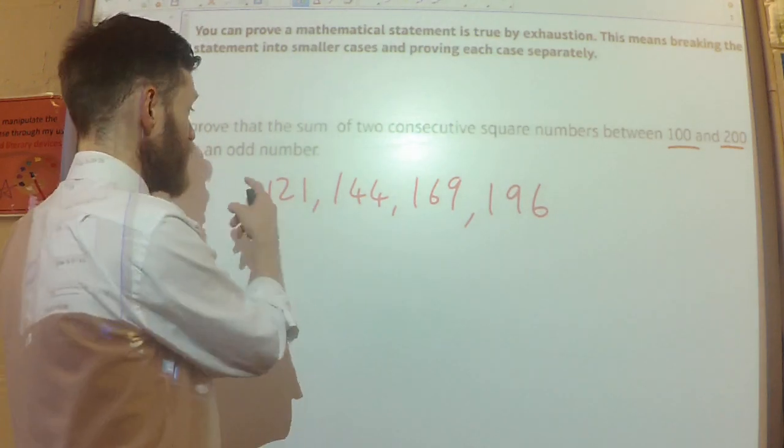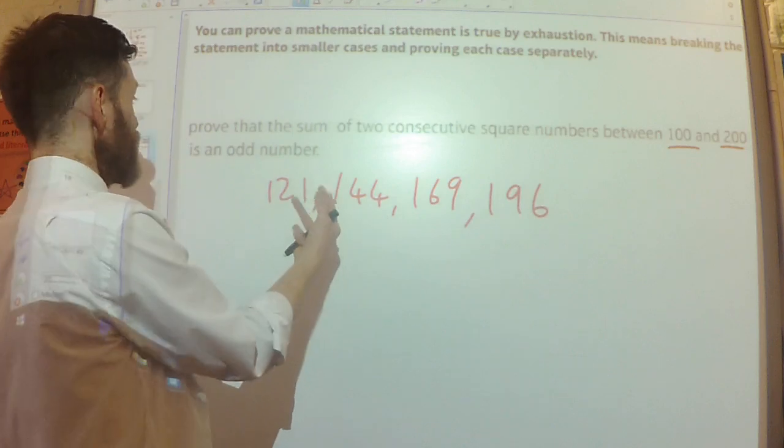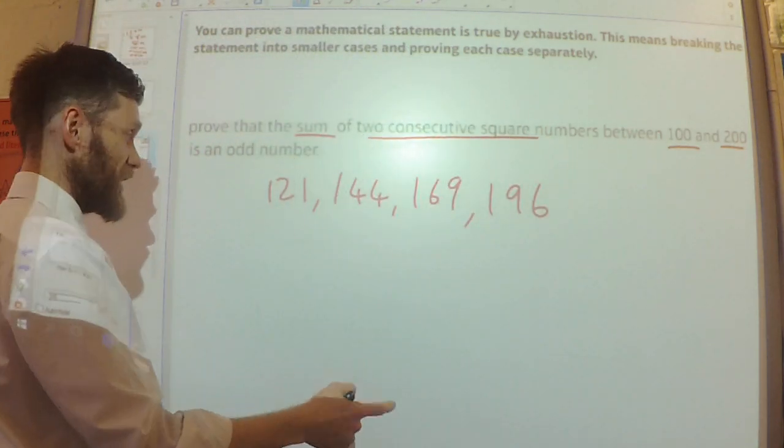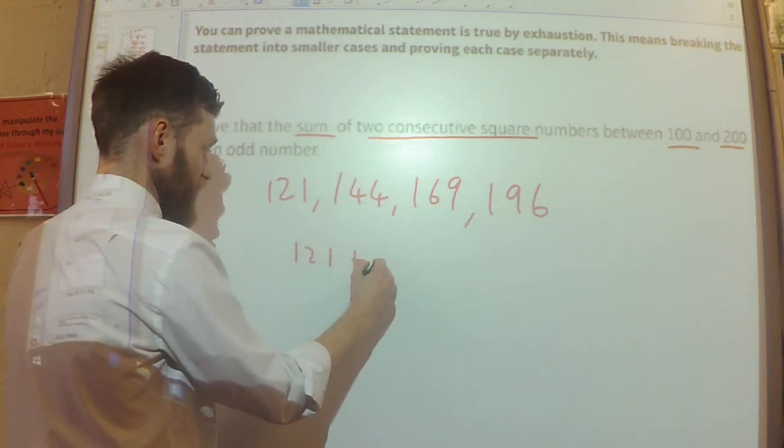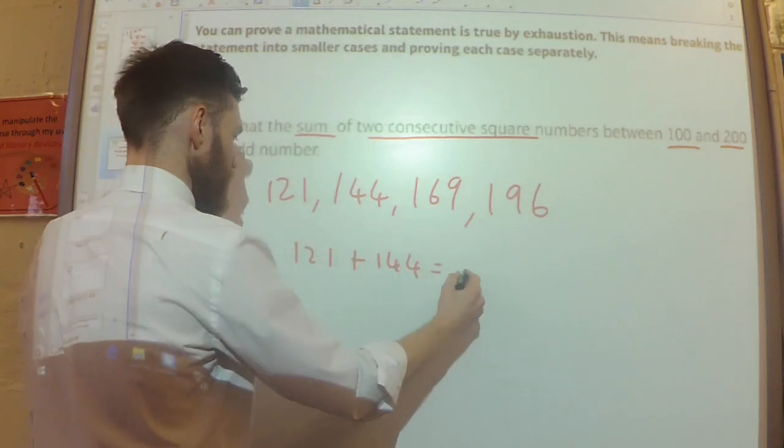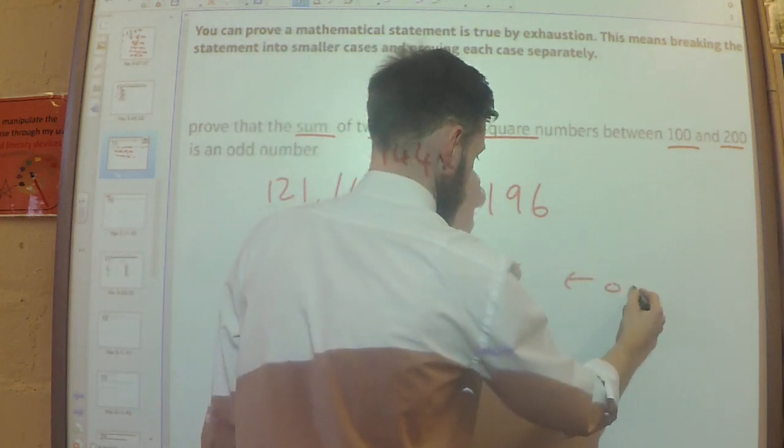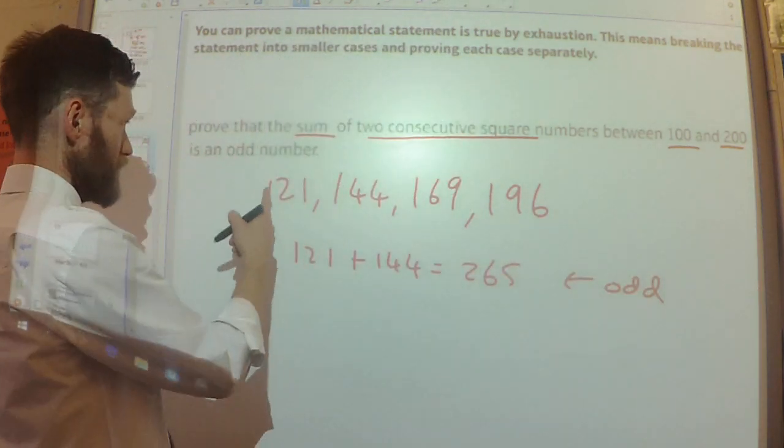So really, all I actually need to do is prove that for these cases here, this statement is true. It's the sum of two consecutive square numbers. Okay, so let's do the first two. 121 plus 144 is 265. That's odd. Okay, that seems to work.